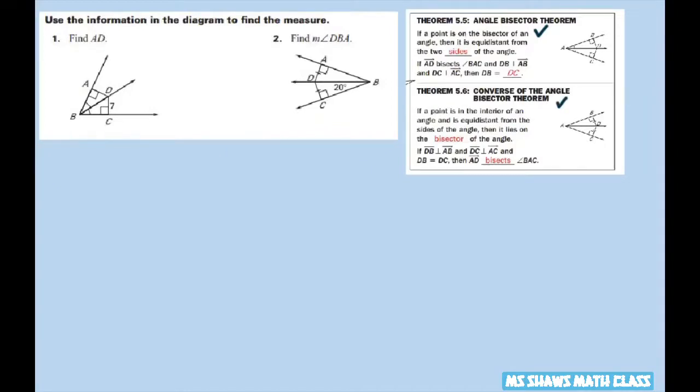What you need to know about it is that if you have perpendicular lines here and here, and the angle bisector AD bisects angle A, then these two sides are the same.